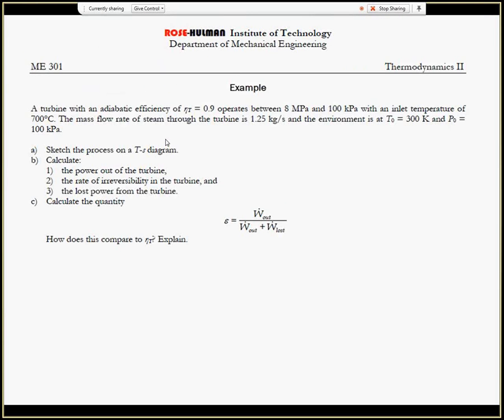Okay, so in this problem we've got a turbine with an adiabatic efficiency of 0.9. We're given the pressures between which it's operating, the mass flow rate through the turbine, the temperature at the inlet, and also for something new, we've got the temperature and pressure of the environment here.